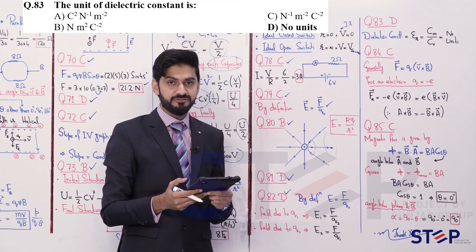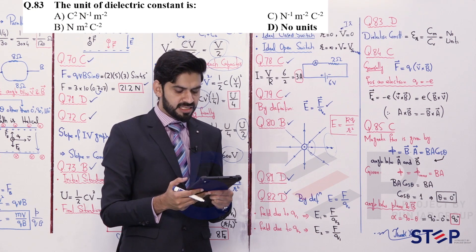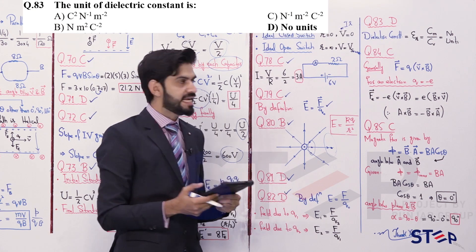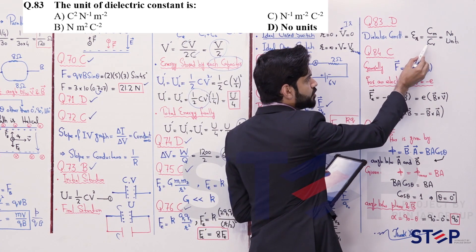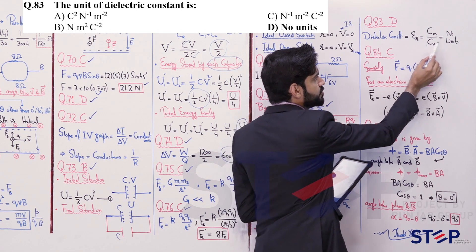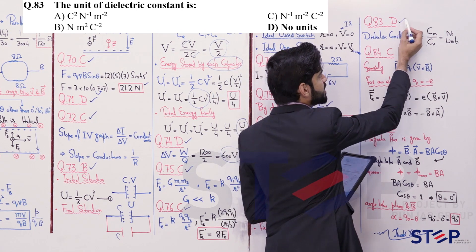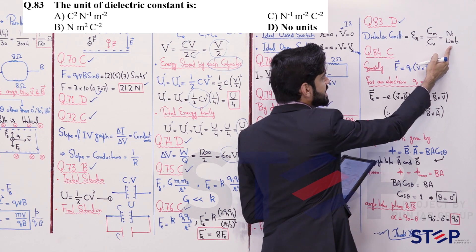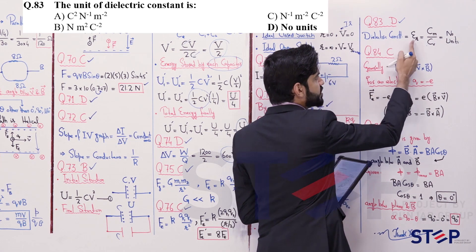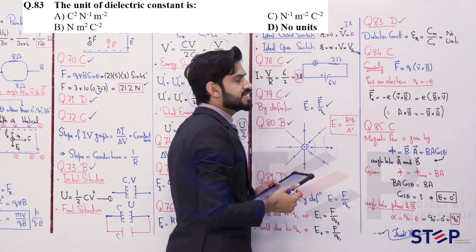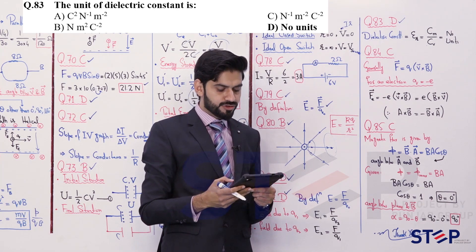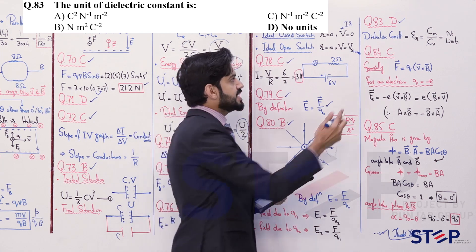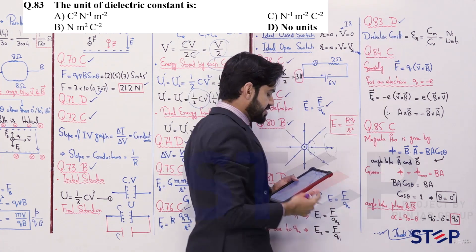Question 83: The unit of dielectric constant. Dielectric constant ε_r = C_medium / C_vacuum. Since both are capacitances (same unit), their ratio is dimensionless — no unit. Dielectric constant is a unitless, dimensionless quantity. Question 83's answer is option D.